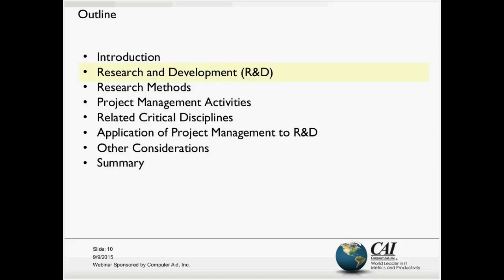The terms research and development in many organizations are interpreted in different ways. There are established definitions as to what falls in the categories of R&D and specifically what does not. There's a body of knowledge compiled annually by the Organization for Economic Cooperation and Development, known as the Frascati Manual, which carefully and clearly outlines what is and what is not part of R&D. It's used to compile statistics on global R&D and innovation activities, so the definitions are really solid and consistent. This is important because as you're applying project management methods, it's good to know that your definition of research and development is consistent with the global standard definitions.